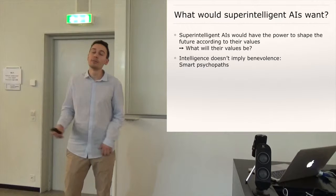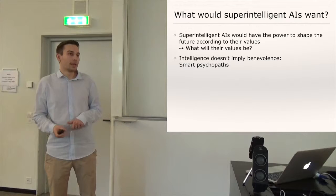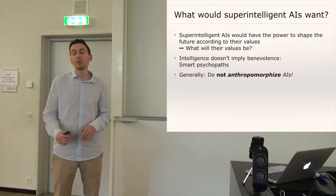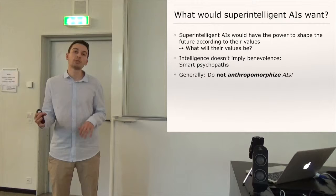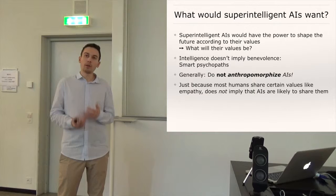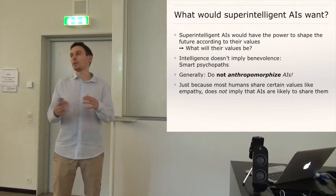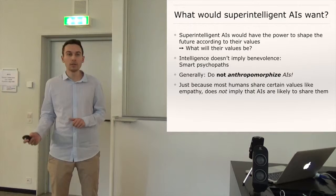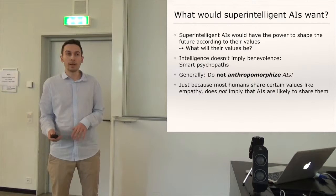And just in general it's very important not to anthropomorphize neither the capabilities but especially the goals or motivations of AIs. For example, most humans share just because we are a biological species that has common ancestors. We share certain values like for example concern for status or empathy more or less towards others and but there's no reason why AIs should also have these values. AIs could have completely alien values.